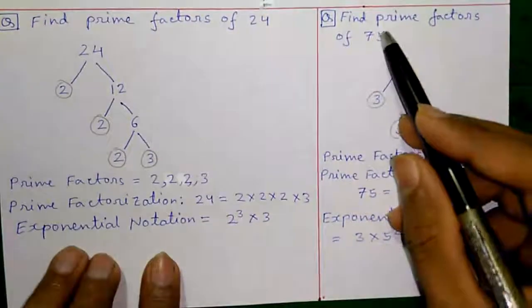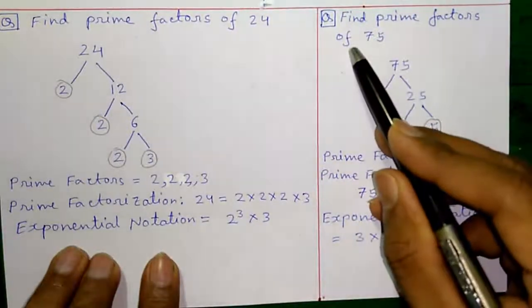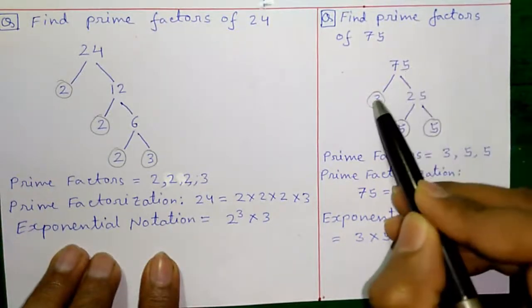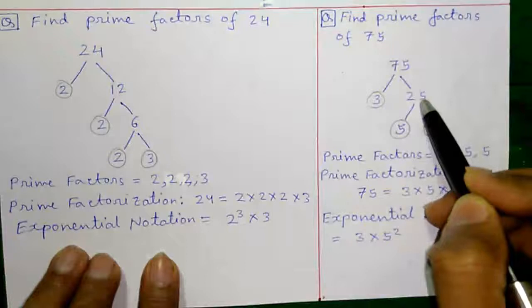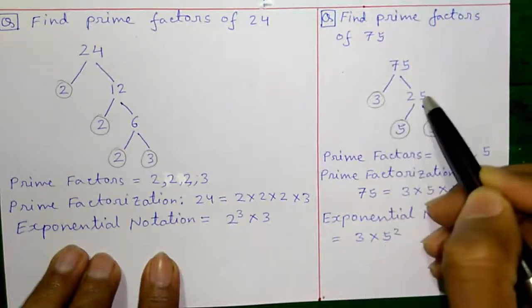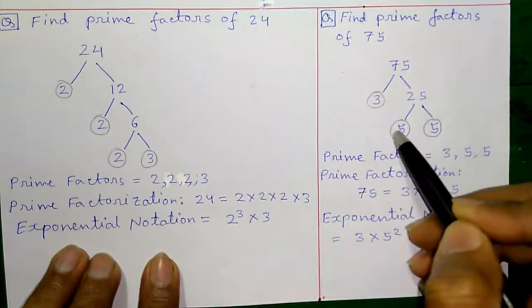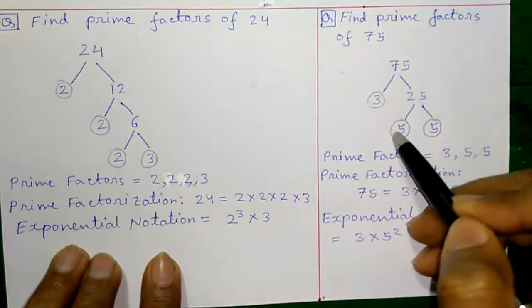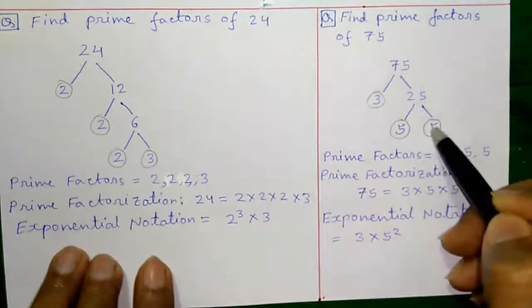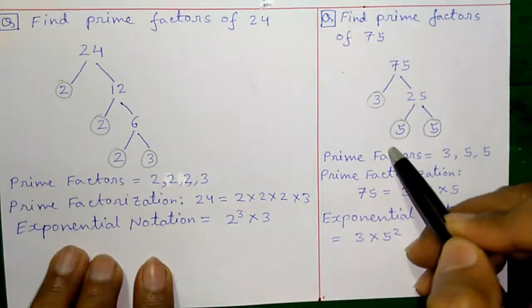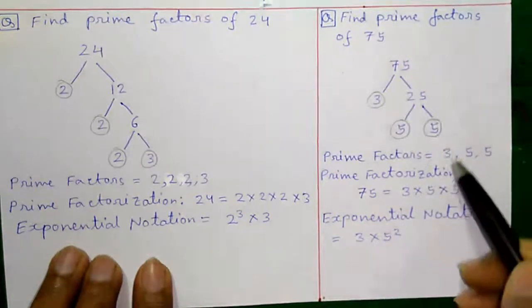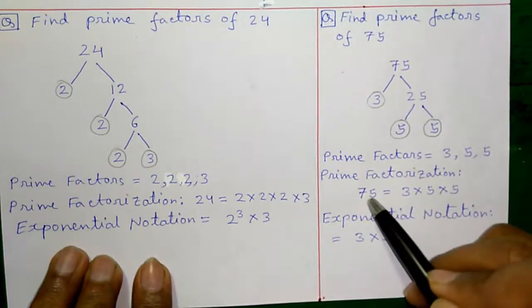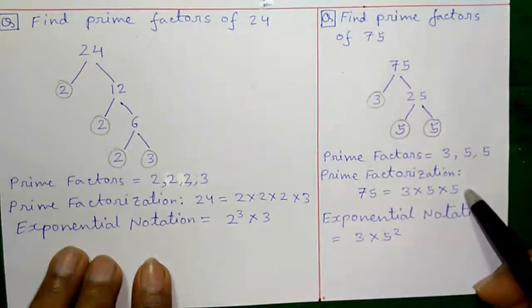Let me show you another example of prime factors of number 75. So first we will write 75. We know 75 equals to 3 into 25. 3 is a prime number but 25 is divisible by 5 and 5. So we will write 5 into 5. So the prime factors are the leaf numbers 3, 5 and 5.